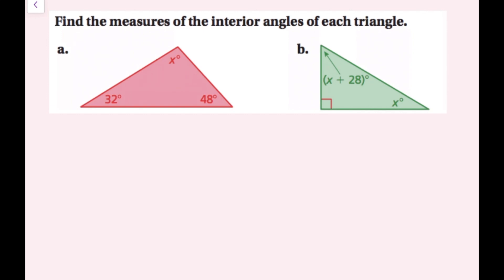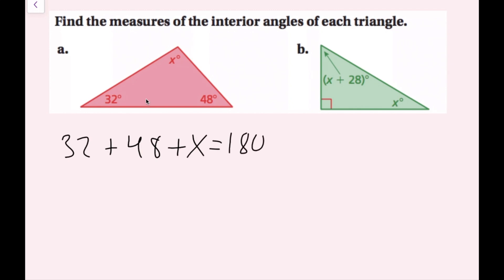Find the measures of the interior angles of each triangle. I know I can add all the interior angles up and set them equal to 180, so I'm going to write 32 plus 48 plus x equals 180. First, I'll combine like terms: 32 plus 48 is 80, so I have 80 plus x equals 180.